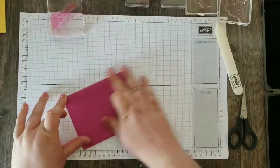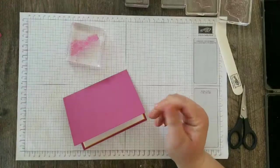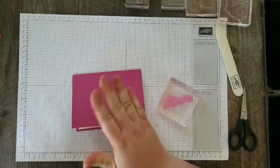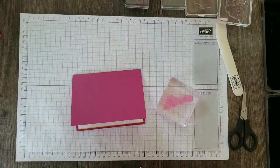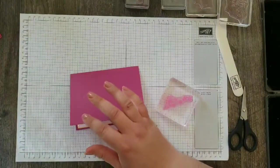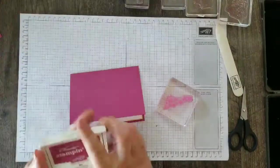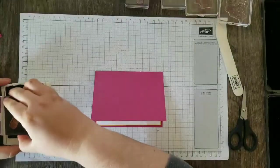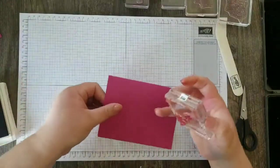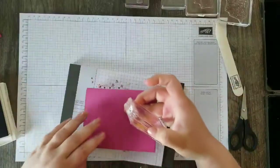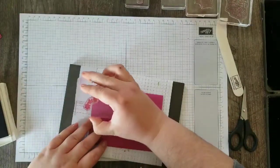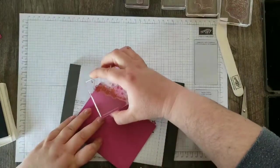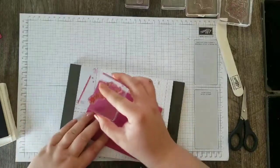So next I want to work on the card front. And the first thing I want to do is we're going to do a lot of layering on this card. I want my base to have some dimension to it. So I'm going to come in here with my Berry Burst and I'm just going to stamp these little flowers around the edges of my card base.